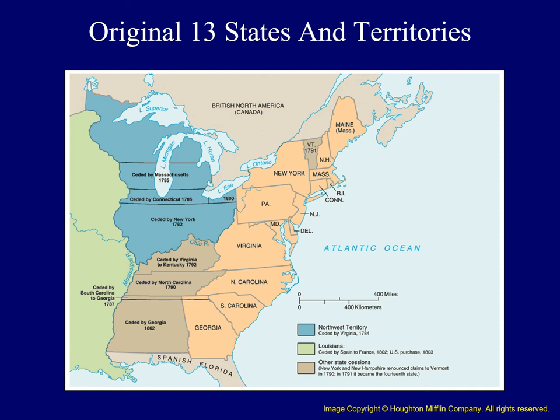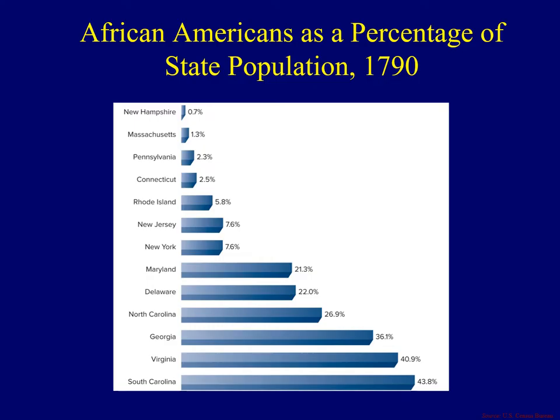During the era of the Revolution, as people spoke of equality and liberty, some states like Massachusetts began to legally phase out the institution of slavery. A visual aid shows the number of African Americans as a percentage of each state's population in 1790 when the first census was taken. Notice that over 40 percent of the residents of South Carolina and Virginia were African Americans — overwhelmingly enslaved.